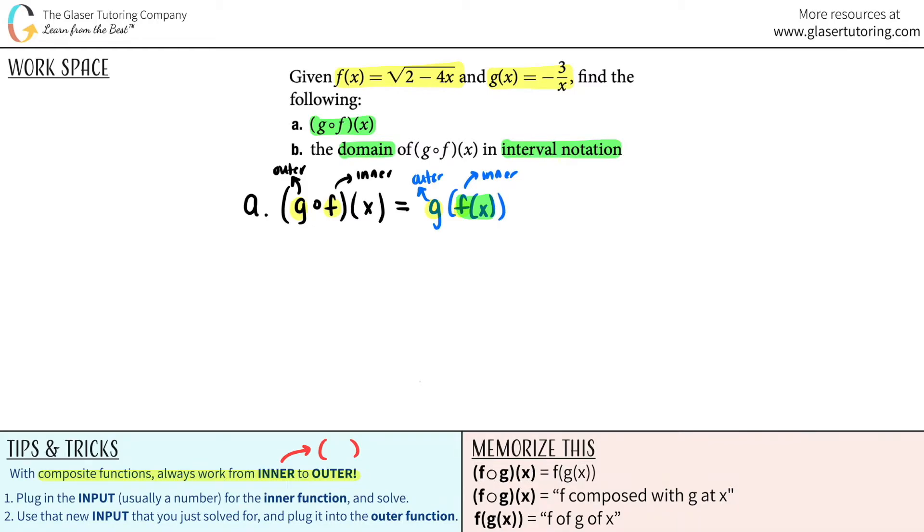So for the first thing we're going to do and look down here again, we're going to plug in the input, usually a number, for the inner function and solve. However, they just gave us an x and an x and an x. So I don't have any numerical value, but I'm just going to say what it says over here. It just says f of x. Well, what was f of x? Oh, f of x was just the square root of two minus four x. Can't really simplify this. So I'm just going to leave it like this.